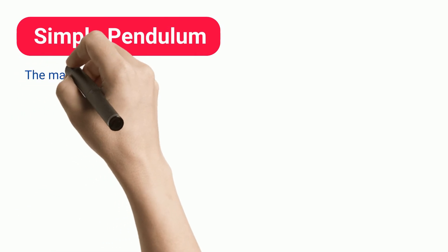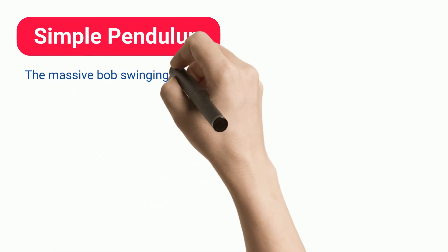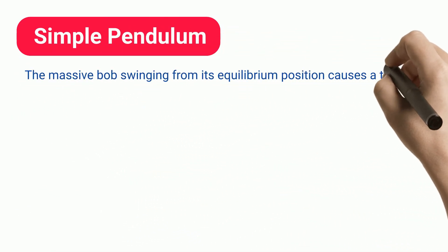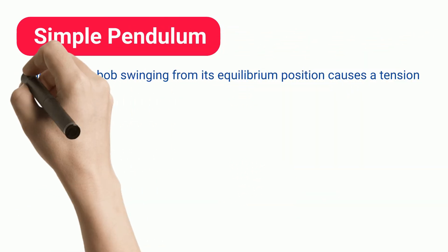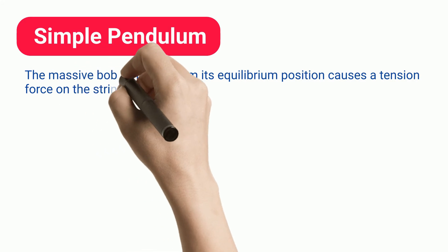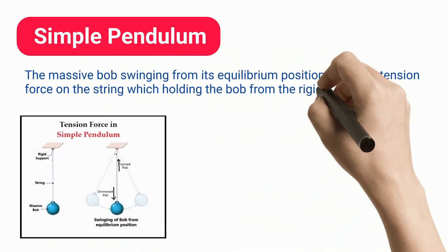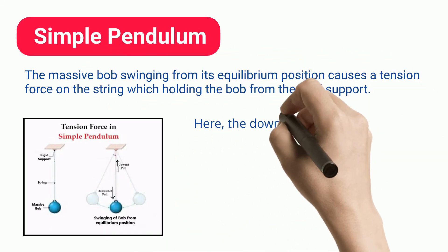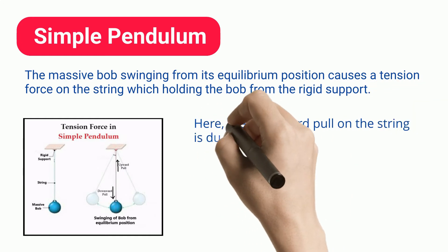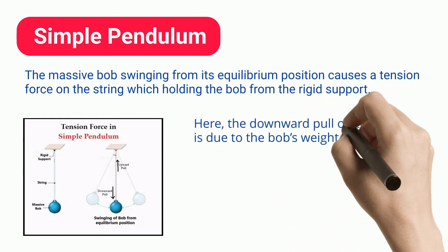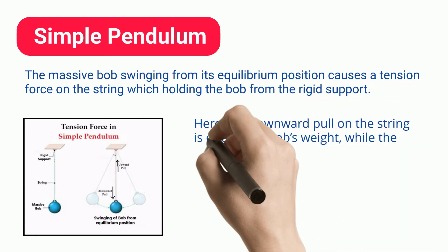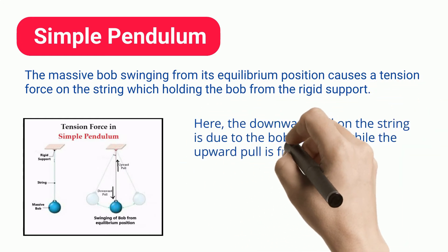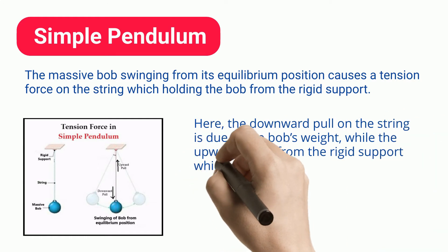Simple Pendulum. The massive bob swinging from its equilibrium position causes a tension force on the string which holds the bob from the rigid support. Here, the downward pull on the string is due to the bob's weight, while the upward pull is from the rigid support which resists the string's tug.